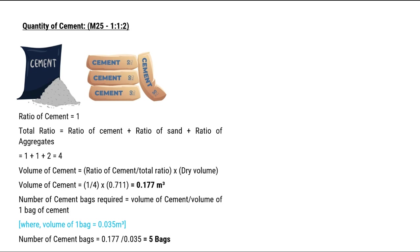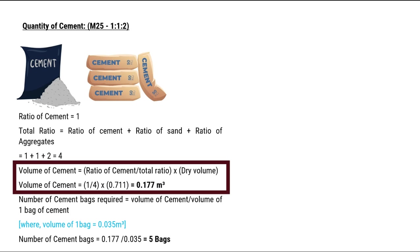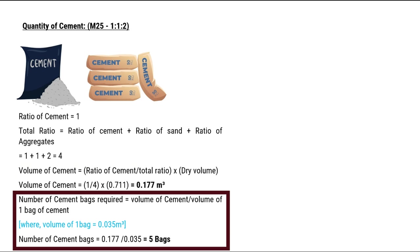To calculate the volume of cement, we use the formula: Volume of cement equals ratio of cement upon total ratio, multiplied by dry volume. That gives us 1 upon 4 multiplied by 0.711, equals 0.177 cubic meters. Number of cement bags required equals volume of cement upon volume of one bag of cement, which gives us 0.177 upon 0.035, equals 5 bags.